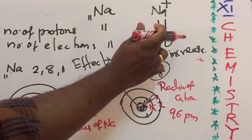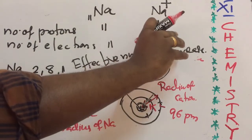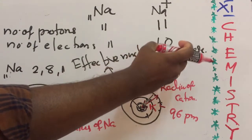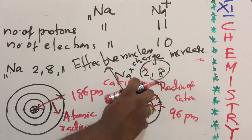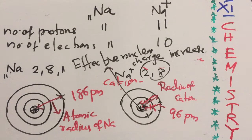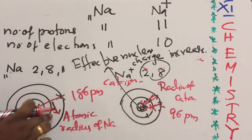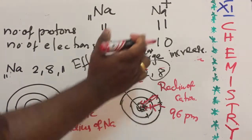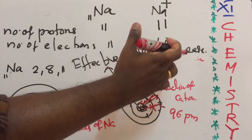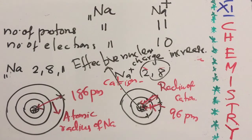To summarize: the 11 protons attract 10 electrons more strongly than they attracted 11 electrons, so the electrons are pulled more strongly toward the nucleus and the size decreases. There are two reasons: first, the number of shells decreases by one; second, in the cation, the effective nuclear charge increases due to a greater number of protons relative to electrons. Therefore, the radius of a cation is always smaller than the radius of the corresponding neutral atom.